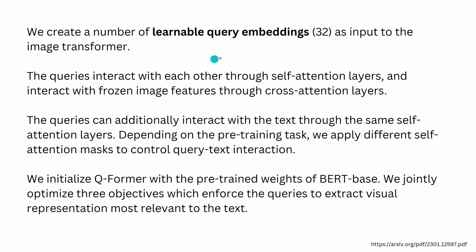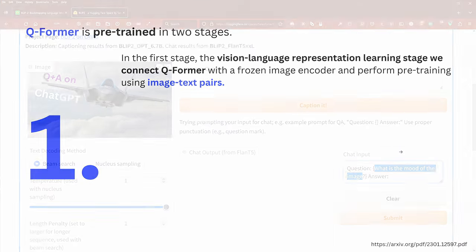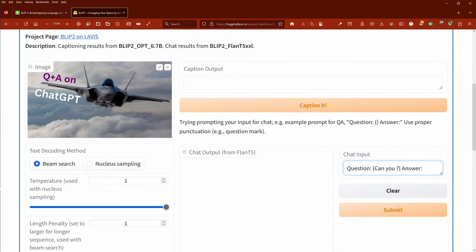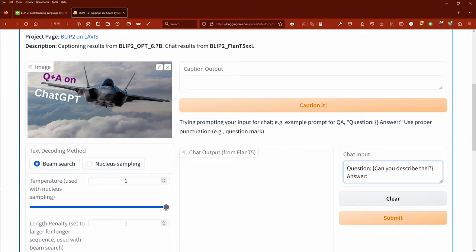To initialize the Q-Former, they use the weights from a BERT-base model. It all comes together: combining vision technology with language technology — BERT as a sentence transformer. Can you describe the elements in the image?